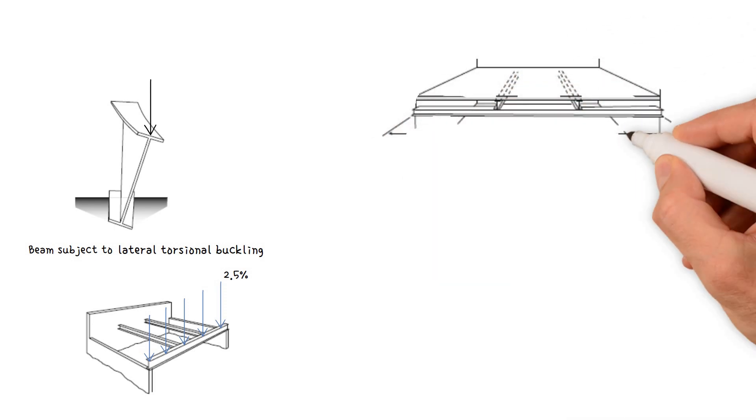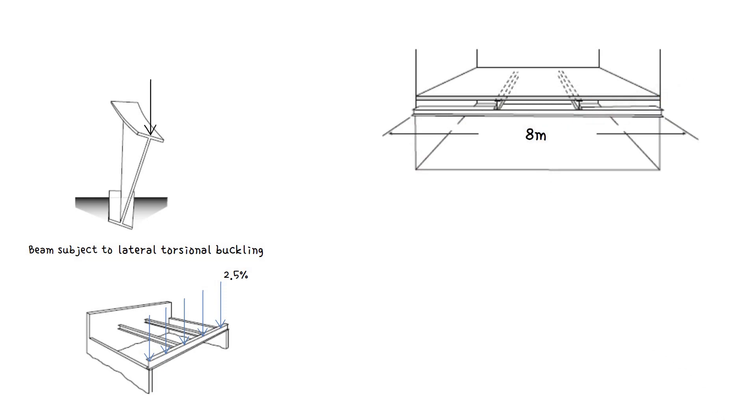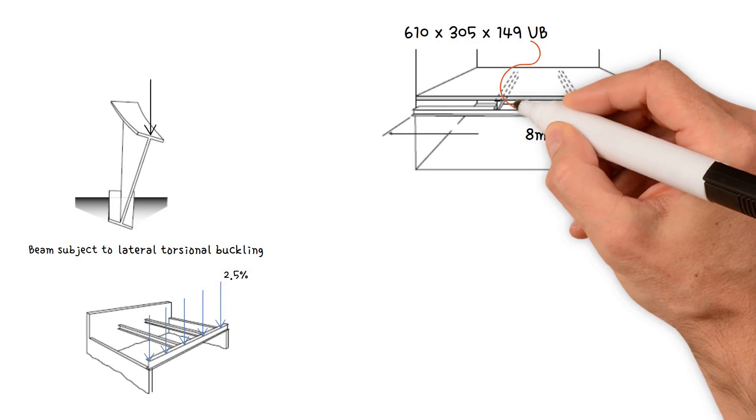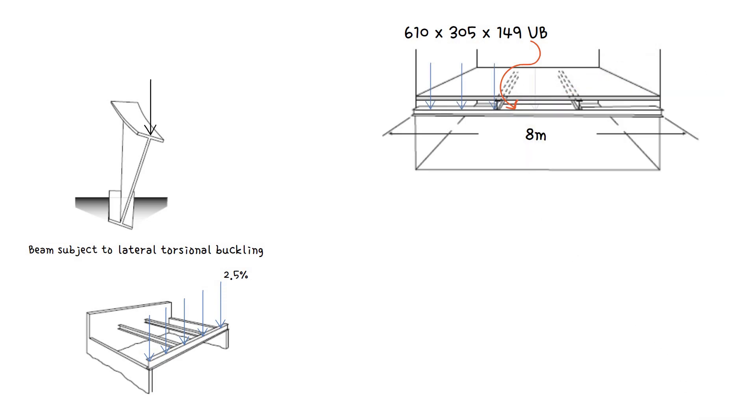Taking a simple example, we have an 8 meter long 610 by 305 by 149 UB supporting a UDL of 20 kilonewtons per meter ultimate load, with lateral restraints at third points along its length. The question is how to calculate the axial force that needs to be resisted by the restraints.